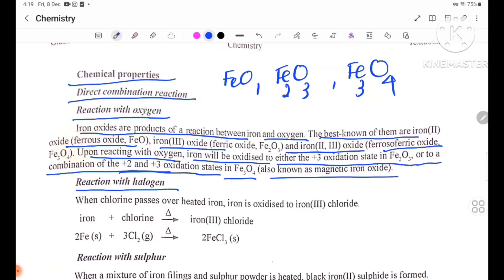Reaction with halogen. When chlorine passes over heated iron, iron is oxidized to iron(III) chloride. Fe solid plus Cl2 gas, heat forming, FeCl3 iron(III) chloride.